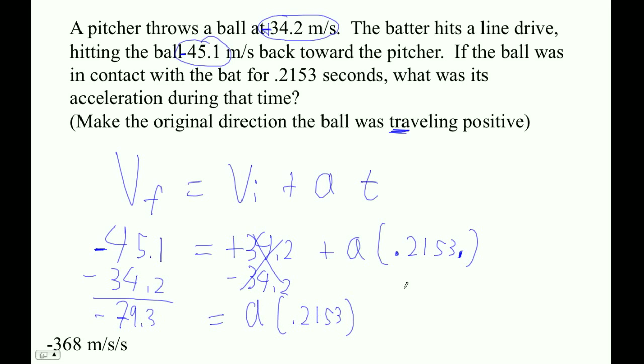And so the last step is not to subtract, it's to divide. So divide by 0.2153. And my answer is negative 368 meters per second squared. These guys here are divided, right? So he gets negative 368.